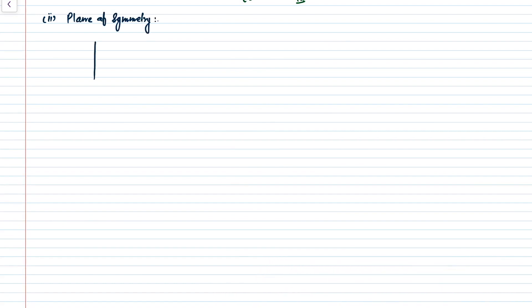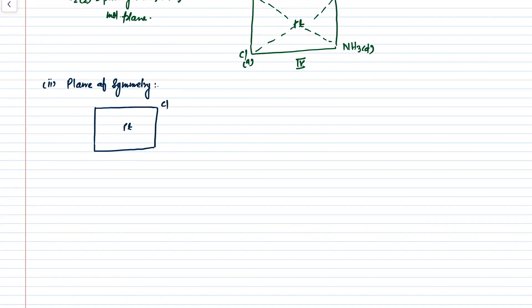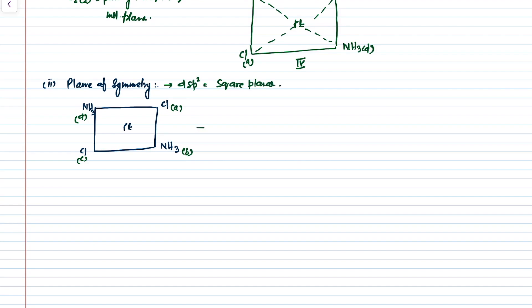Now we will search for the presence of planes of symmetry — whether this molecule has a plane of symmetry or not. The next symmetry operation is the plane of symmetry. We redraw the square planar geometry, taking the same structure as before, marking positions A, B, C, and D. Since the hybridization is dsp2 and the shape is square planar, this is a planar molecule. So it will have one plane, which is the molecular plane, shown in pink.